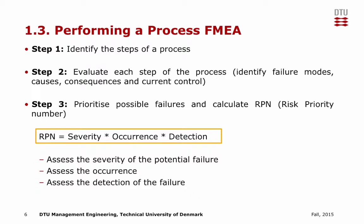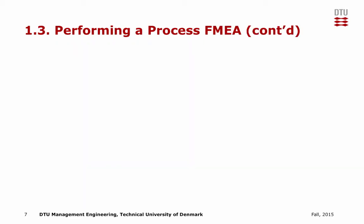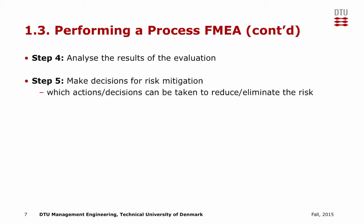These three factors are graded from 1 to 10, with 1 being low and 10 being high. Step 4: the evaluation is analyzed, identifying which steps in the process contain the highest risk according to the RPN. Step 5: the high-risk steps are analyzed and actions for risk reduction are determined. And finally, step 6: the process is re-evaluated and iterated.